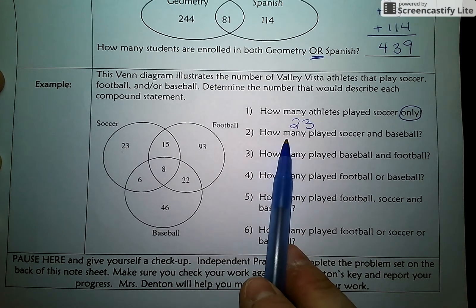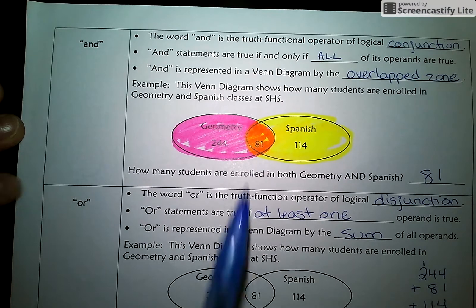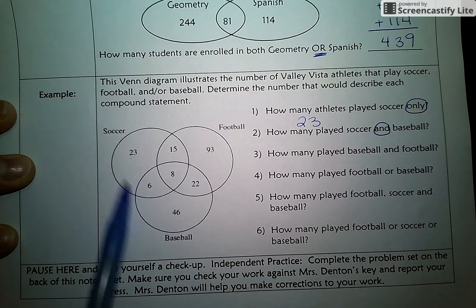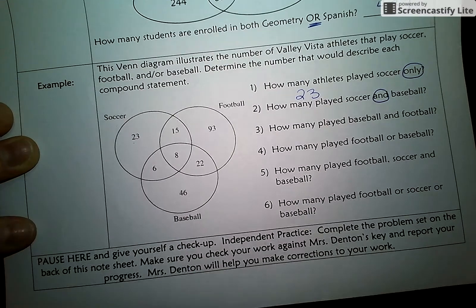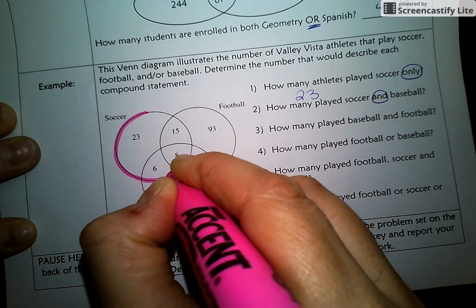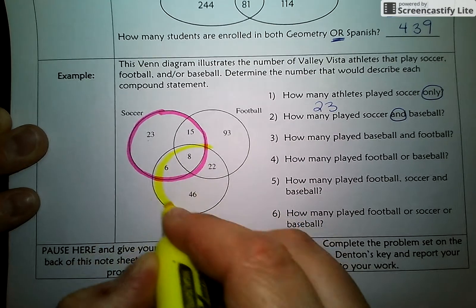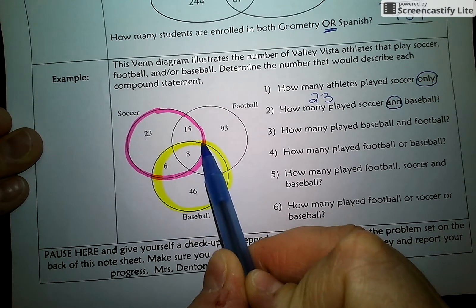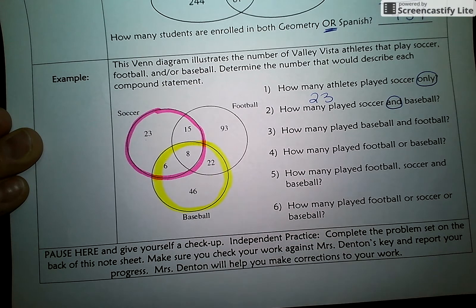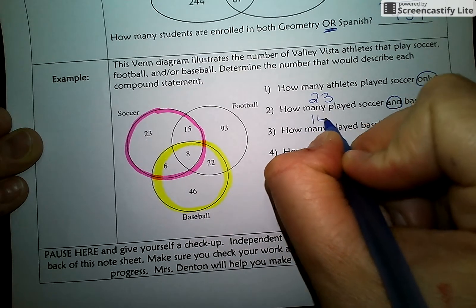How many athletes played soccer and baseball? Remember, an AND statement is looking for the overlap zone of a Venn Diagram. So we need to find the soccer team, find the baseball team, and find the zone that overlaps those. I'm going to outline soccer in pink and outline baseball in yellow. This shape — kind of looks like a football — is the AND zone of soccer and baseball. There are six kids here and eight kids here, for a total of 14 kids who play both sports.